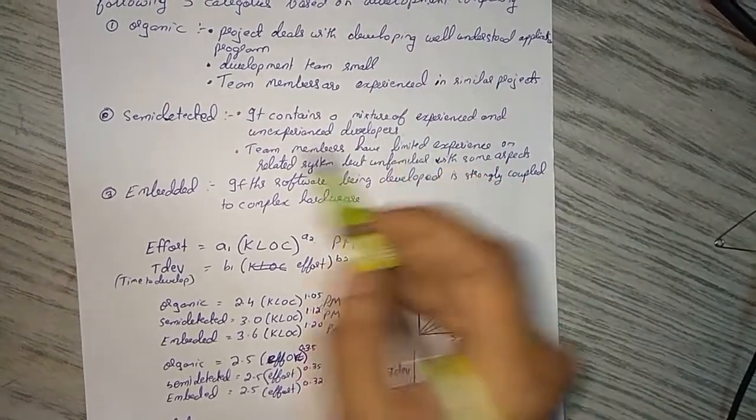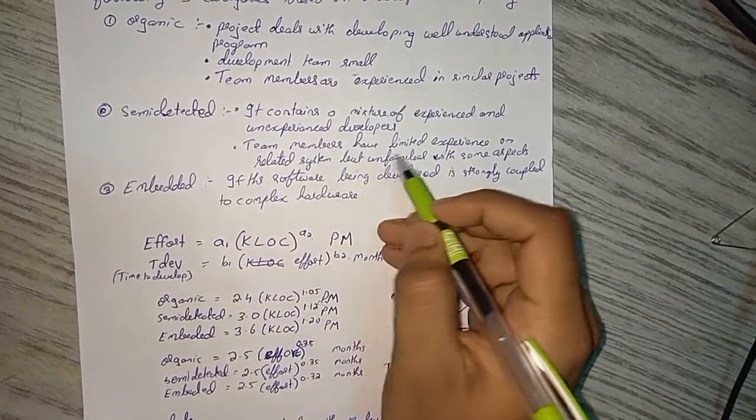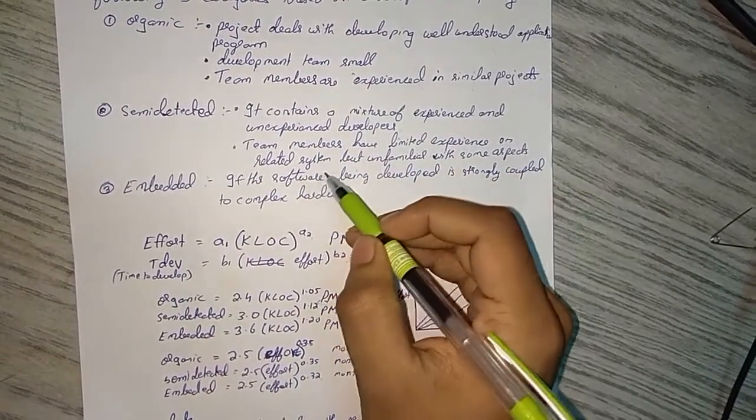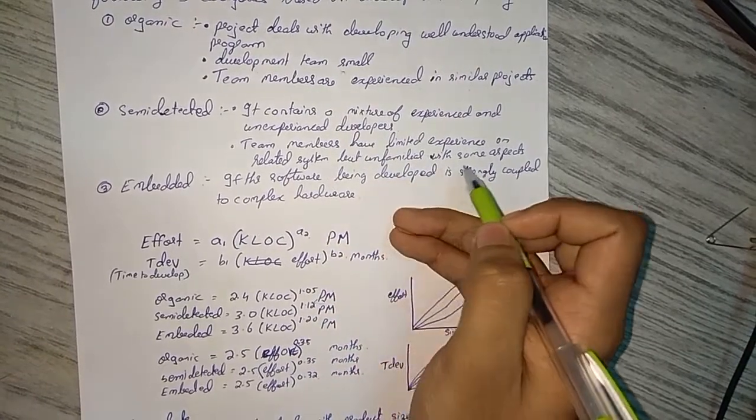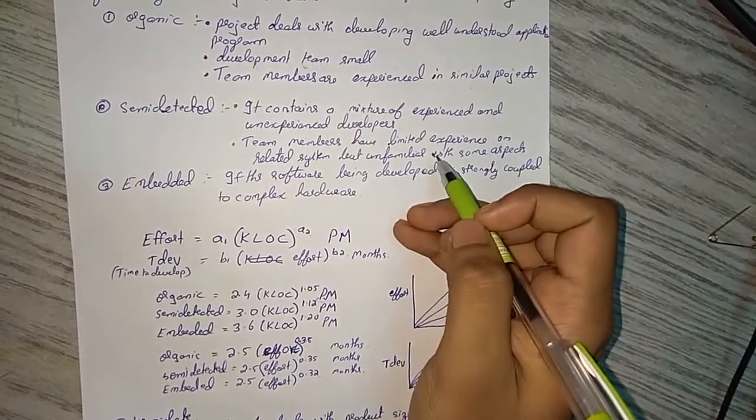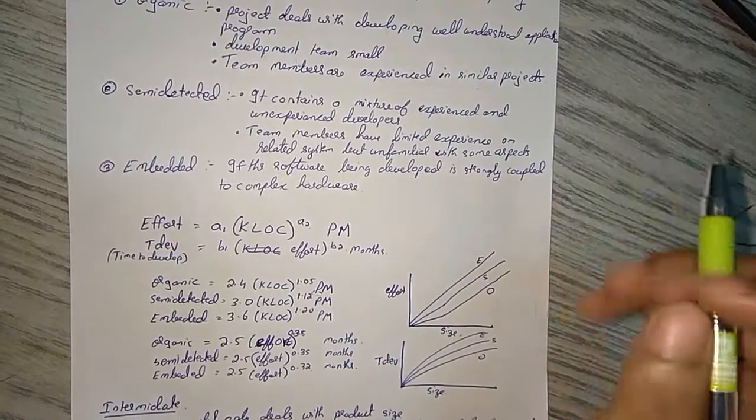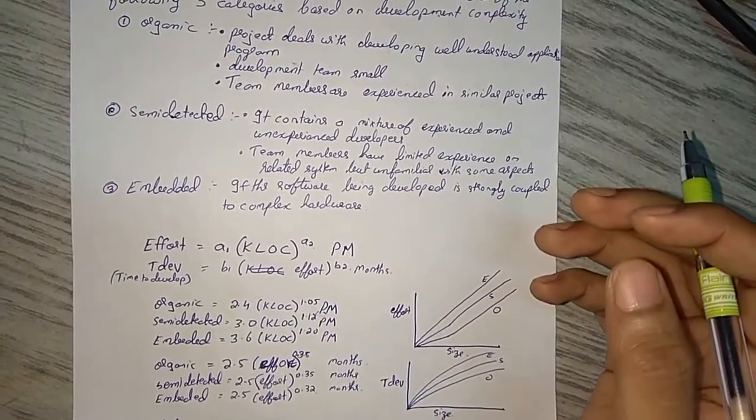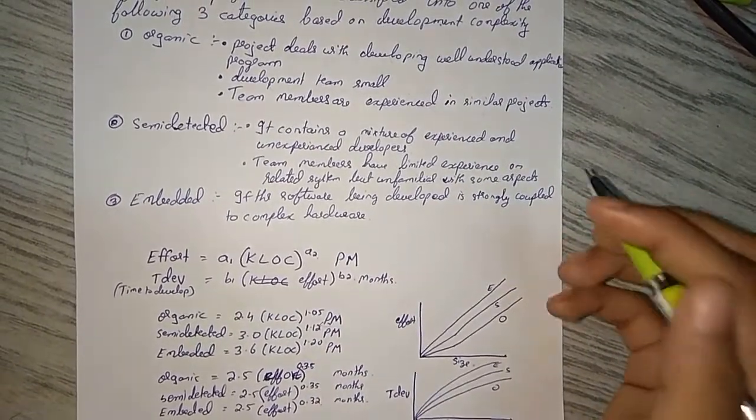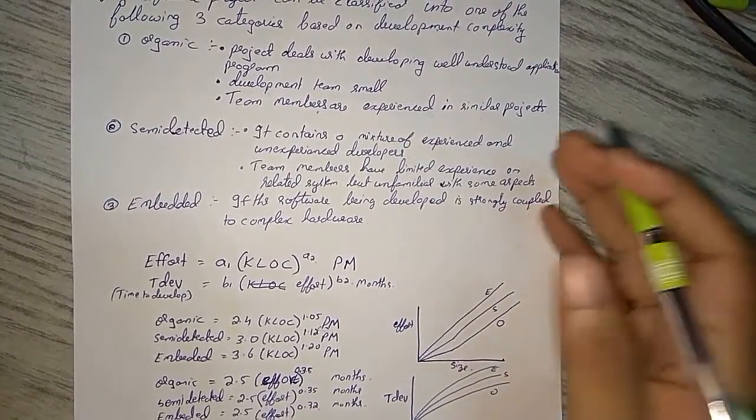So such kind is semi-detached, and team members have limited experience on related systems but unfamiliar with some aspects. That means they do have experience in similar things but they have very less, but for some topics they are not much familiar. That is semi-detached.